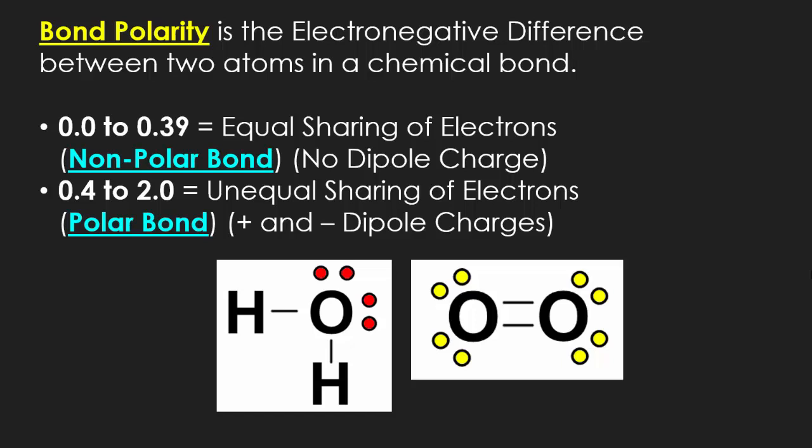And to be polar, you must be above 0.4 but below 2.0. If you have a polar bond, that means you're going to have positive and negative dipoles inside of your molecule.